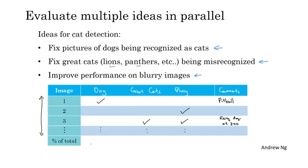Then finally, having gone through some set of images, I would count up what percentage of each of these error categories were attributed to the dog or great cat or blurry categories. So maybe 8% of these images you examined turned out to be dogs, and maybe 43% great cats, and 61% were blurry. So this just means going down each column and counting up what percentage of images had a check mark on that column.